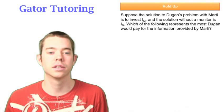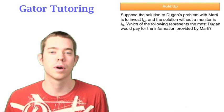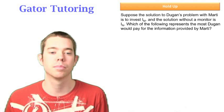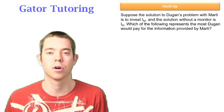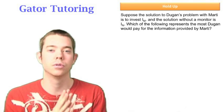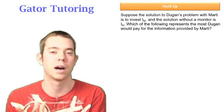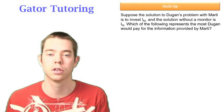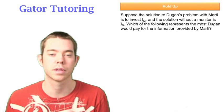The last question says, suppose the solution to Dugan's problem with Marty is to invest I_M and the solution without a monitor is I_N. Which of the following represents the most Dugan would pay for the information provided by Marty? So we're looking for the value of information. So that's going to be the value with information minus the value without information. Or Dugan's total surplus with information minus Dugan's total surplus without information.